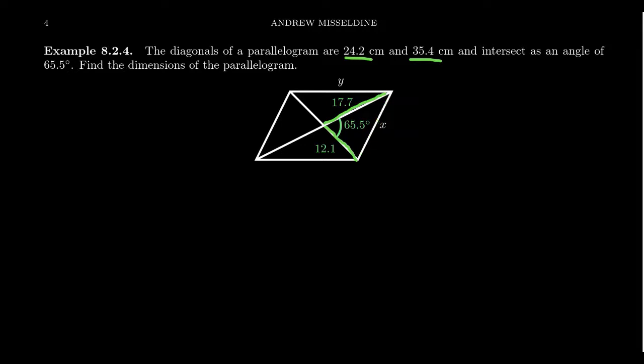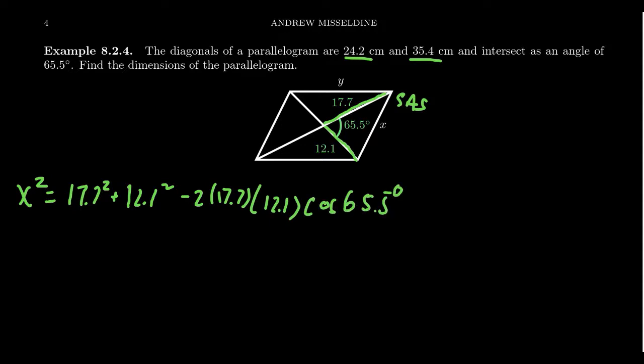Notice that we have a side angle side situation here. So we can use the law of cosines to figure out the missing side X. So we get that X squared is going to equal 17.7 squared plus 12.1 squared minus 2 times 17.7 times 12.1 times cosine of the angle 65.5 degrees.